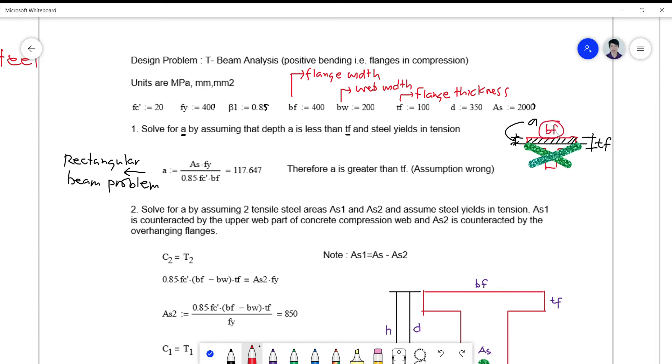So the width of the web is actually striking off here in our formula. So instead of BW we are using BF instead of BW. Now, upon checking your rectangular beam stress block depth, we found out that it is 117.647.